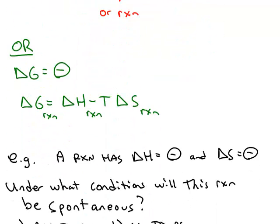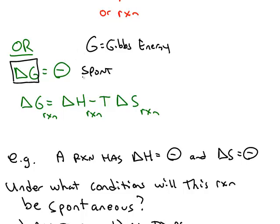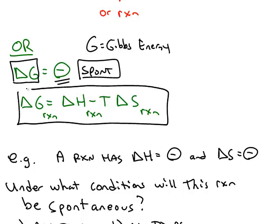The second law of thermodynamics can also be described in terms of the change in Gibbs energy. A spontaneous reaction has a negative value of delta G. Delta G for a chemical reaction is given by the formula: delta H minus T times delta S. So you have the enthalpy change, the entropy change, and also the temperature.